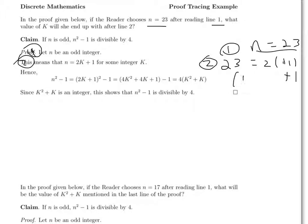So in other words, k equals 11 for the choice of n equals 23. So if a reader chooses n equals 23 in the first line of the proof, then the reader will have to use k equals 11 in the second line of the proof. And that's exactly what the question is asking for.